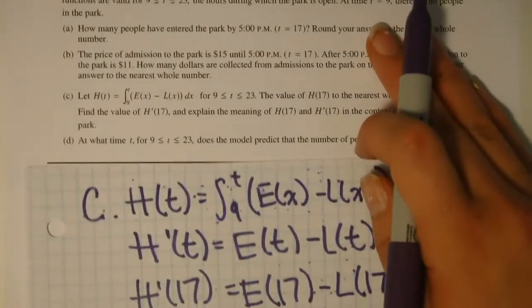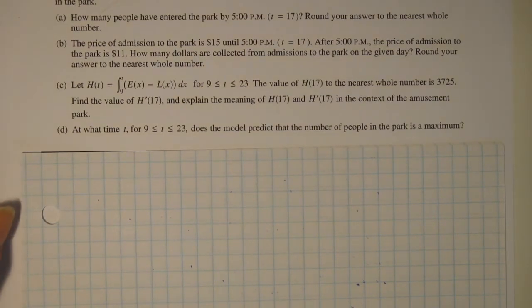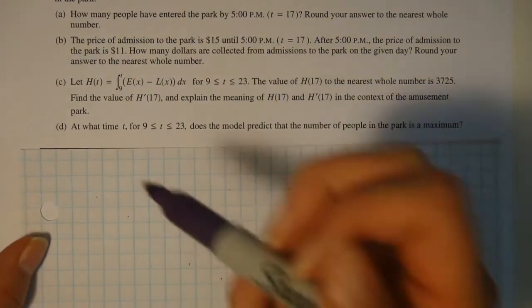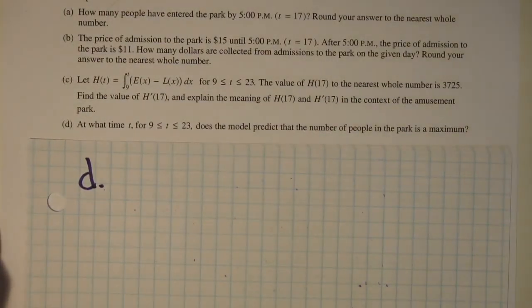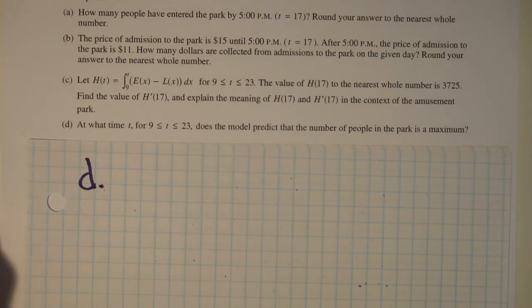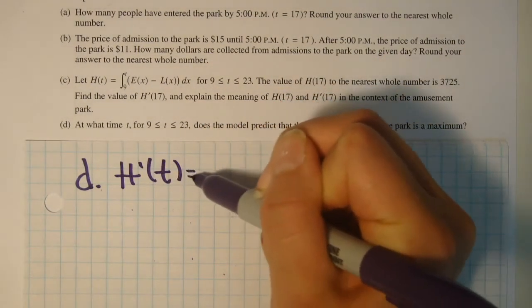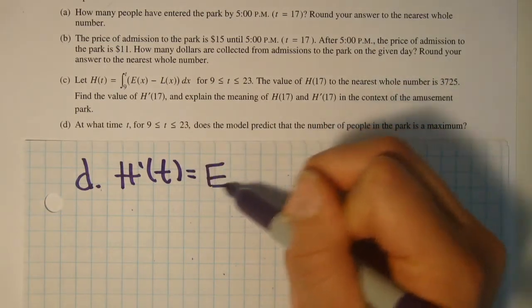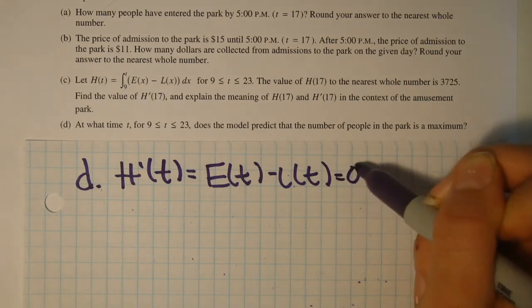Moving on to the last section of the question, question D. This asks, at what time t for 9 to 23 does the model predict the number of people in the park is a maximum? For this problem, we will need to know how to find a maximum. For any part in the AP test, if it asks to find a minimum or a maximum, you must set the derivative equal to 0. And we know the derivative is h'(t) equals E(t) minus L(t). So we must set this equal to 0.